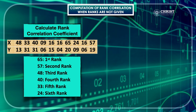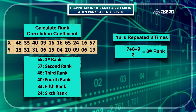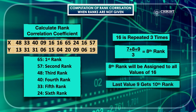Now, how we have assigned the ranks: we take the same order for x series and y series — highest value gets first rank. For x series: 65 gets rank 1, 57 gets rank 2, 48 gets rank 3, 40 gets rank 4, 33 gets rank 5, 24 gets rank 6. Now 16 is repeated three times, so the ranks would have been 7, 8, and 9. The average is (7 + 8 + 9) / 3 = 8. All three 16 values get rank 8. The last value 9 gets the 10th rank. We have to be careful: up to 9 ranks were assigned through the repeated values, leaving the 10th rank for the last value.